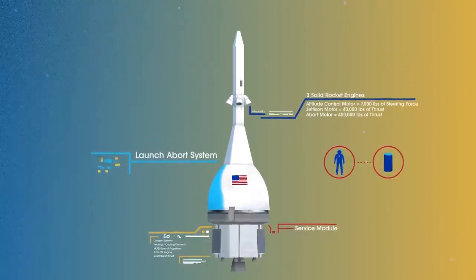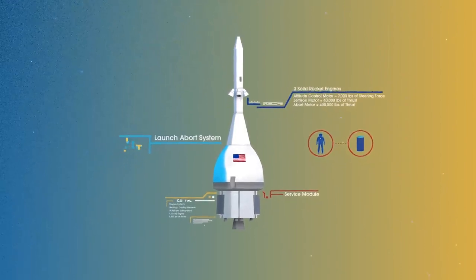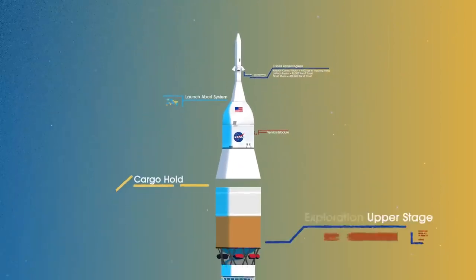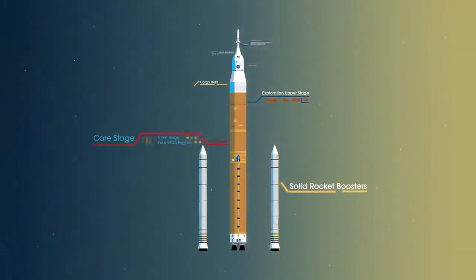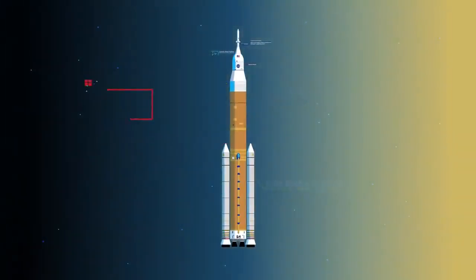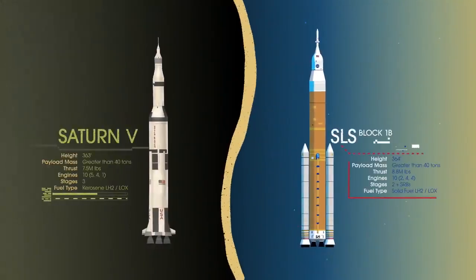To accomplish the task of launching our crew and heavy payloads, NASA is building the Space Launch System, comprising a cargo hold, an exploration upper stage, a massive core stage, and two extended solid rocket boosters. Altogether, this is the world's most powerful rocket, and it exceeds the legendary Saturn V of the Apollo era in numerous ways.